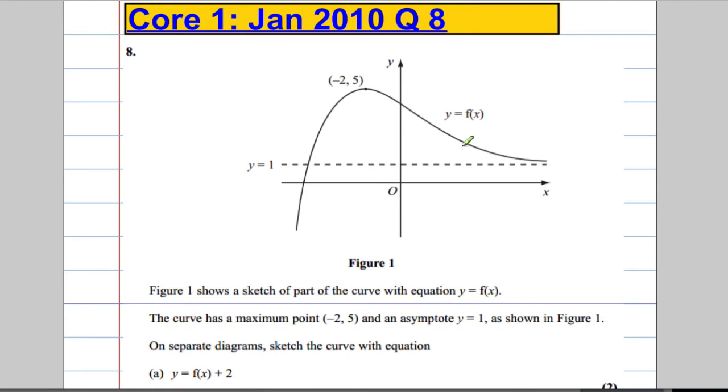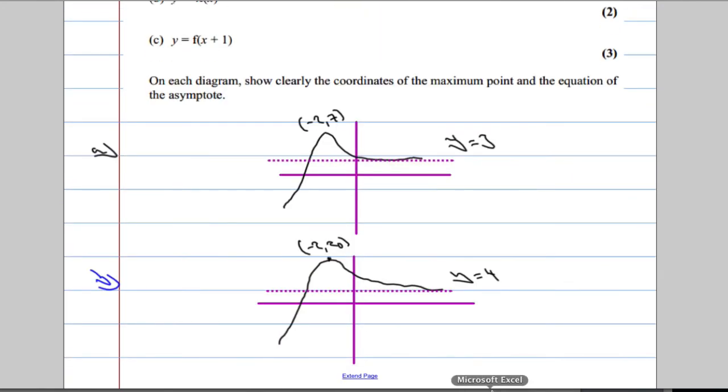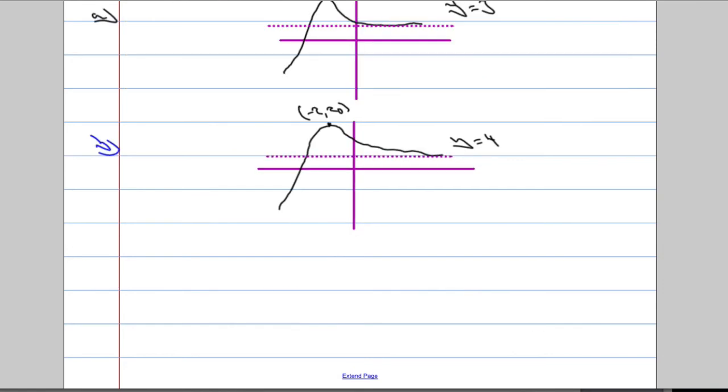So if it says f of x plus 1, that means move it to the left. Move everything to the left by 1. Right. So when we move it to the left by 1, let's have a look and see what we're going to get.